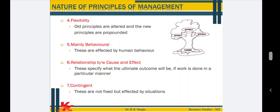Next, relation between cause and effect. Like you will see in this picture — we have planted a small sapling, it converts into a big tree; the cause is the sapling and the effect is the tree. These principles specify what the ultimate outcome will be if work is done in a particular manner. Contingent — these are not fixed but are affected by situations; management principles are not fixed but are affected accordingly by situations.